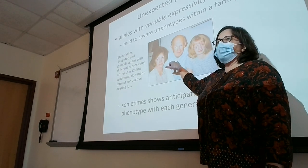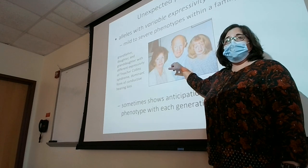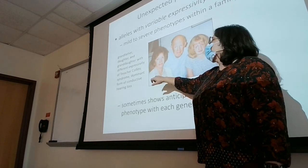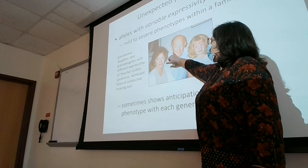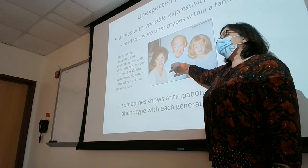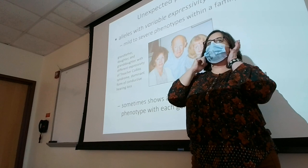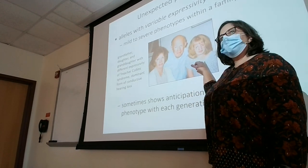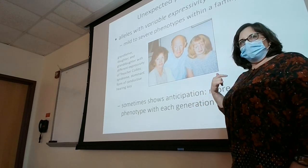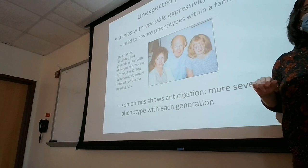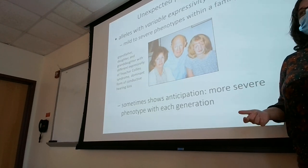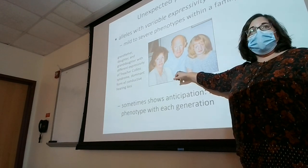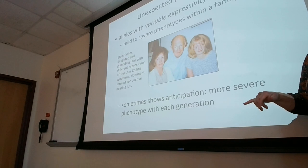Granddad originally had the allele that causes Treacher Collins Syndrome and just has deafness. His daughter is a little more affected — you can see her face is really narrow — and she has deafness plus some unusual facial development. Then the granddaughter had such severe facial development problems that by this point in her life she had been through 80 different surgeries to correct bony problems in her facial bones. So you can go from so mild he didn't even know he had it, to so severe it's life-threatening — with the same exact genotype.